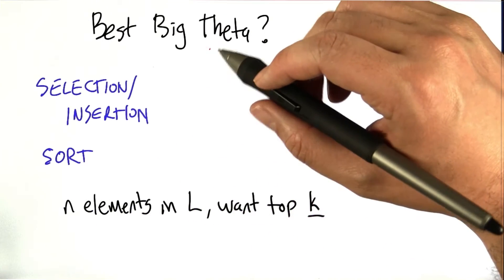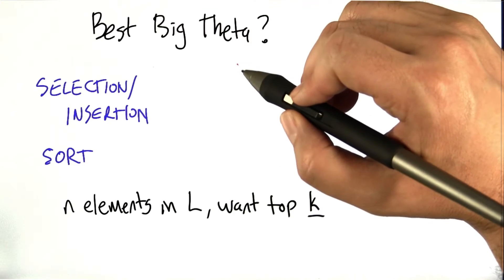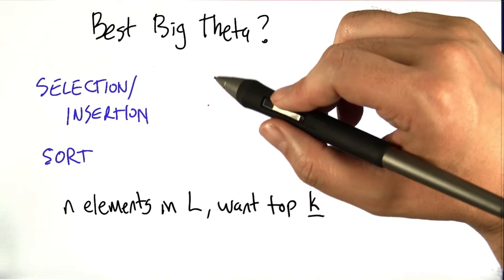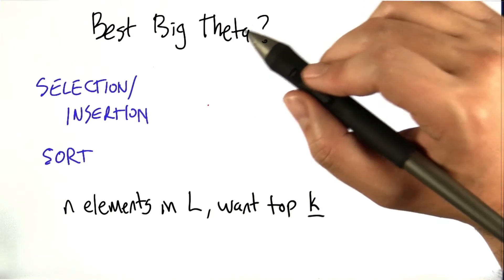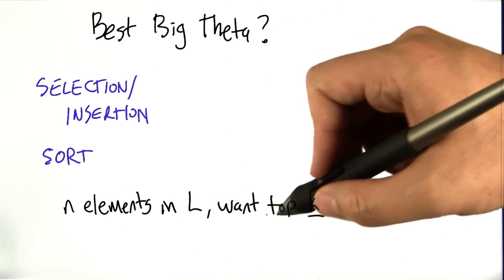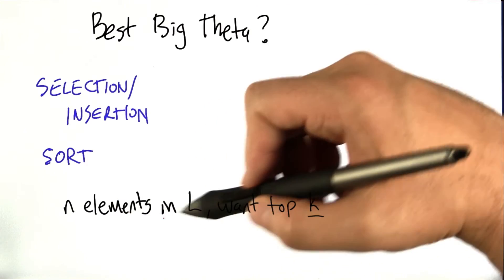So as always, we're trying to find the best algorithm that we can use to run on our data. So which of these algorithms has the best big theta? And I'm going to give you a hint.